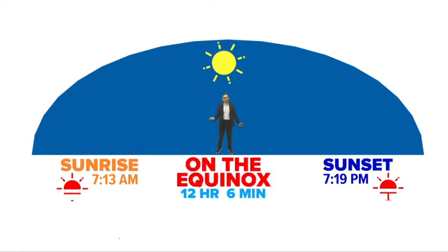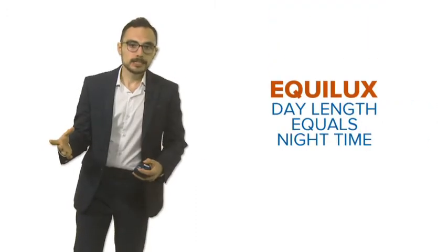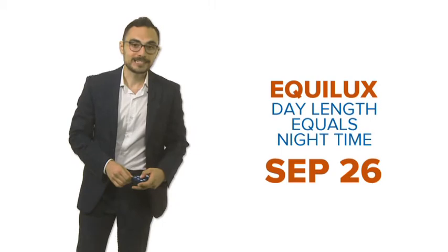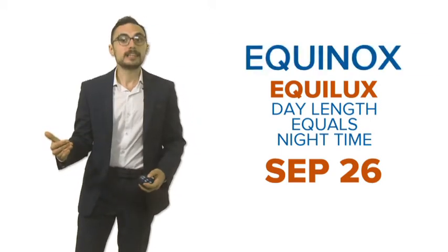There's a lot that you can do in six minutes. Day length and nighttime are just about equal on a date called the equilux. That happens on September 26th this year, a few days after the equinox.